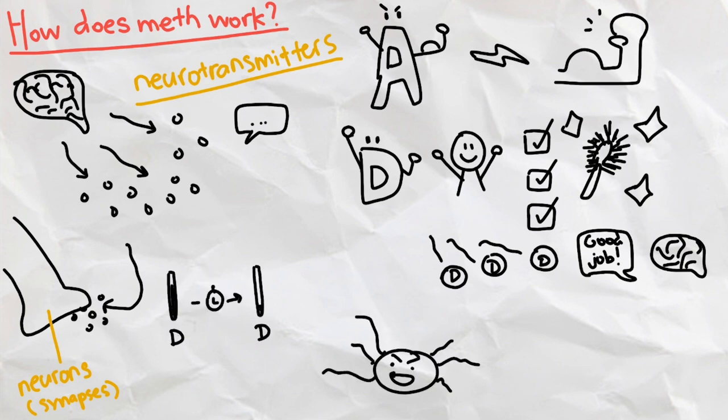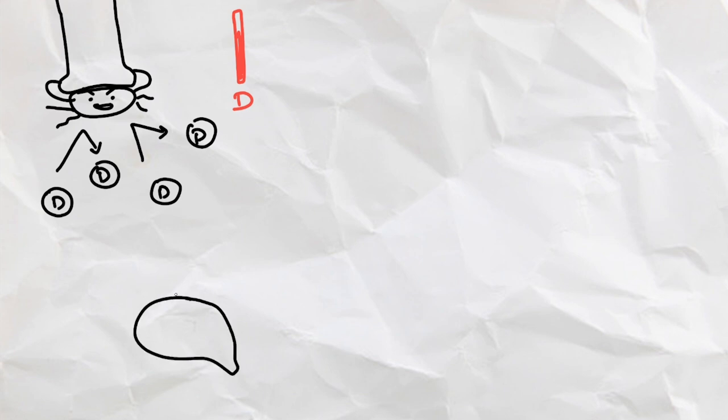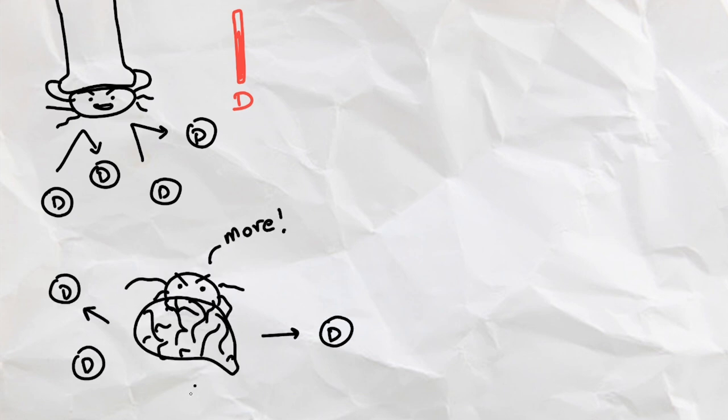But this is where meth comes in. Not only does meth block this reuptake, causing most of the dopamine to linger around in our body, this drug also stimulates our brain to produce more dopamine, flooding our body with an abnormal amount of it.